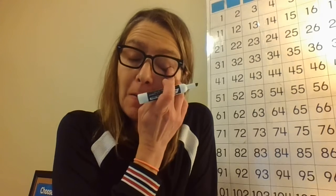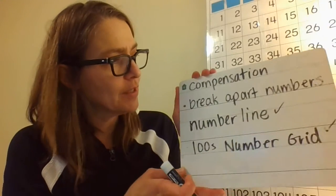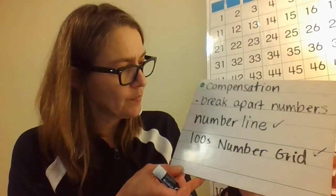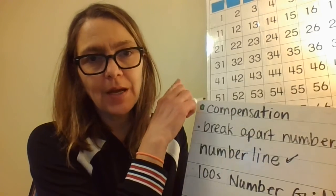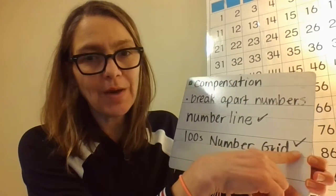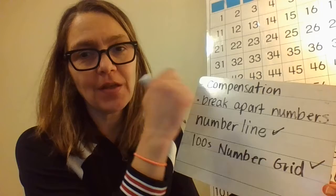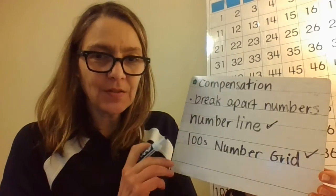Let's get started. The Solve and Share reads: the red team has 15 more points than the blue team. The blue team has 36 points. How many points does the red team have? Remember our strategies: the compensation strategy, the break-apart numbers strategy, the number line, and the number grid 100 chart like I have behind me.